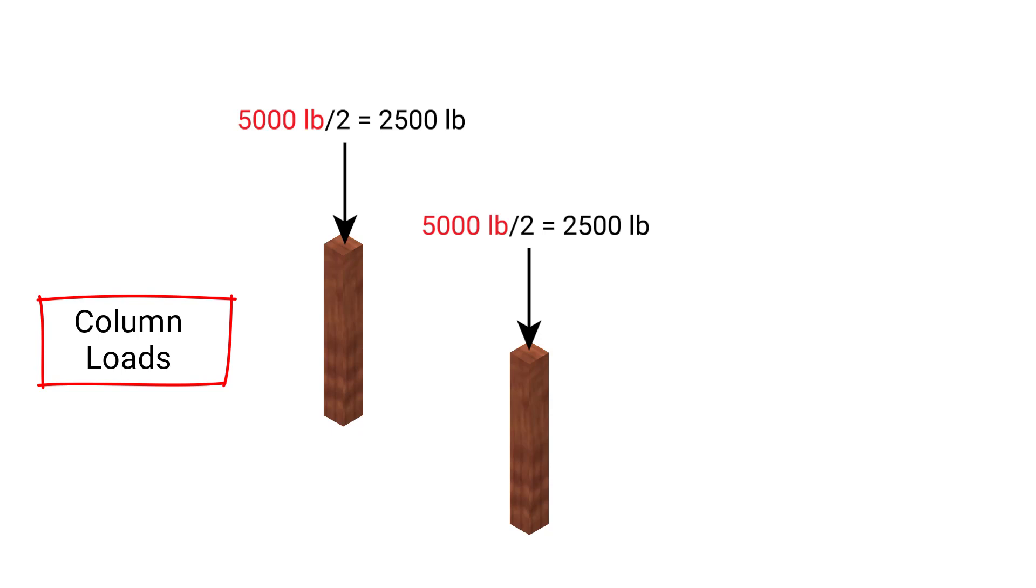Because as we know from Newton's third law, for every action, there's an equal and opposite reaction. And in this case, we have a reaction of 2,500 pounds, which turns into an action that acts at each column.